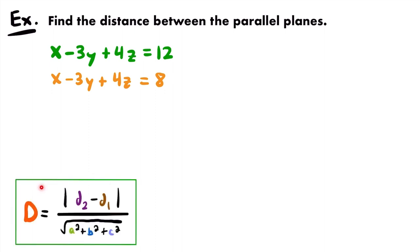The formula is very similar to the distance between a point and a plane but simpler. The distance between two parallel planes equals the absolute value of d₂ - d₁ divided by the magnitude of the normal vector, √(a² + b² + c²). So we have the absolute value of the difference between the two d values, divided by the square root of the sum of the squared components. Let's identify our values: a = 1, b = -3, and c = 4.